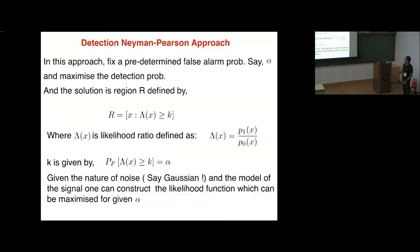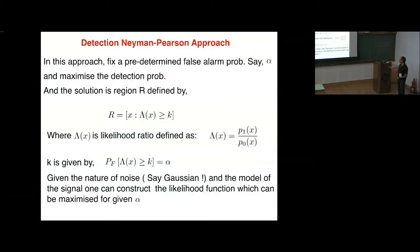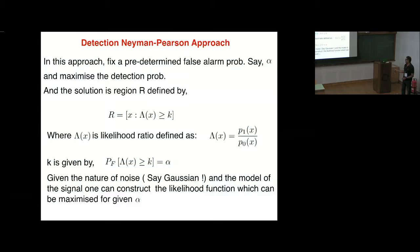In the Neyman-Pearson approach, you have a likelihood function and you start by setting a threshold based on the false alarm rate. You fix that and then maximize the likelihood ratio, which is essentially the ratio of the two PDFs — signal present versus noise only. You pre-define your false alarm probability and then maximize the likelihood function for detection.